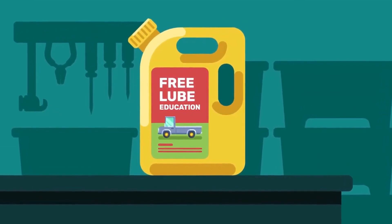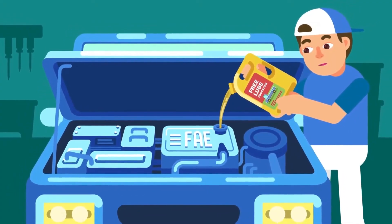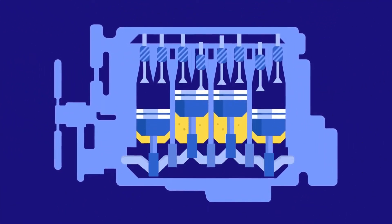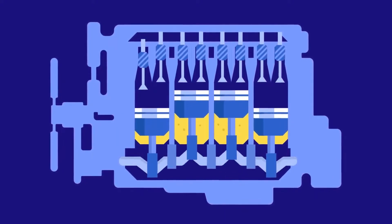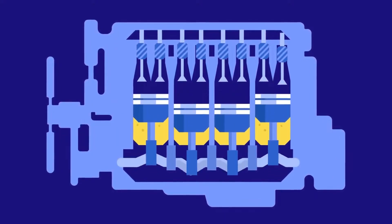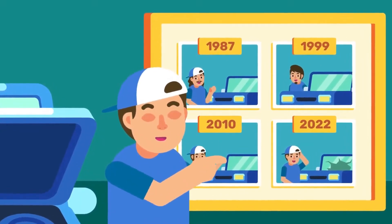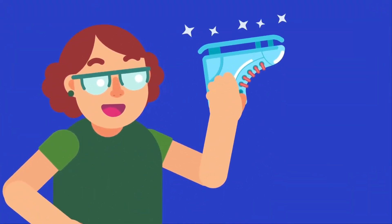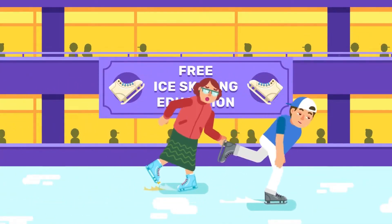Lubricants and polished surfaces. Applying a layer of lubricant such as oil or grease between surfaces in contact can greatly reduce friction. Lubricants are frequently used between the moving parts of an engine to reduce wear and tear, and this helps prolong the life of the engine. Polishing a surface removes surface irregularities, which reduces friction between surfaces in contact.